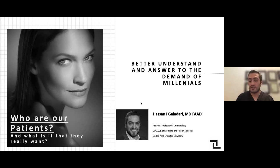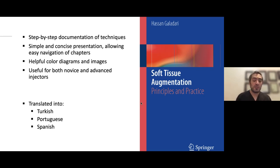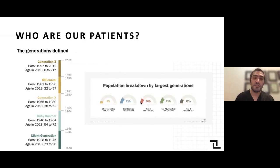Without further ado, my talk today is about better understanding and answering to the demand of millennials, because those are essentially who our patients are. They comprise basically the majority of our population groups in practice. It's very important for us to understand that population group — what are its characteristics — to fully understand how they can be satisfied based on what we are able to offer them in our clinics. I do have a small practical book published in English by Springer, translated into Turkish, Portuguese, and Spanish.